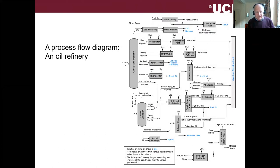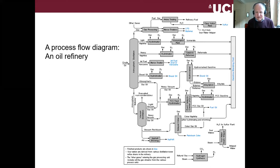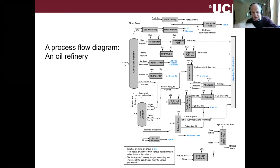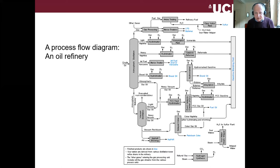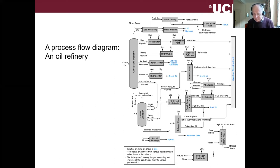If you know anything about chemical engineering, this won't be a surprise: this is a process flow diagram for an oil refinery. It takes crude oil at one side, does all sorts of chemical treating, and produces various products such as gasoline and petrol.